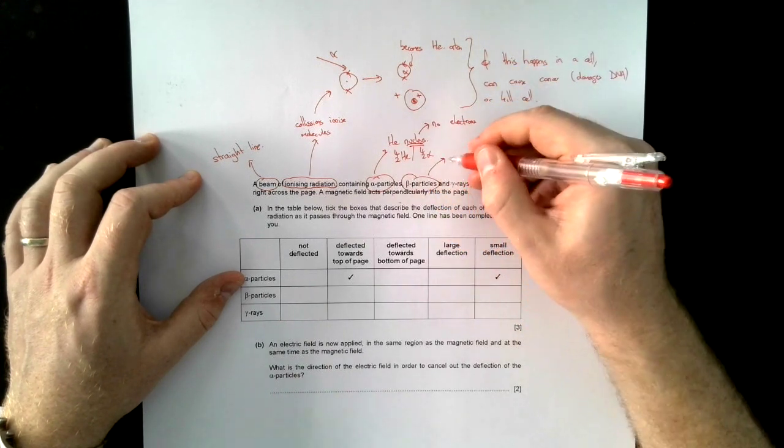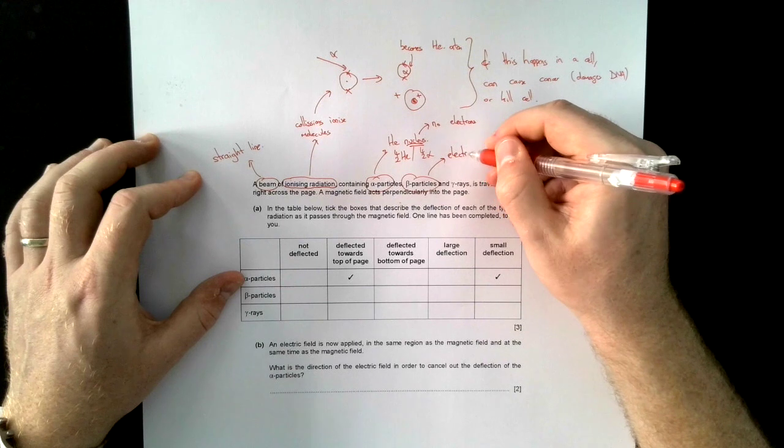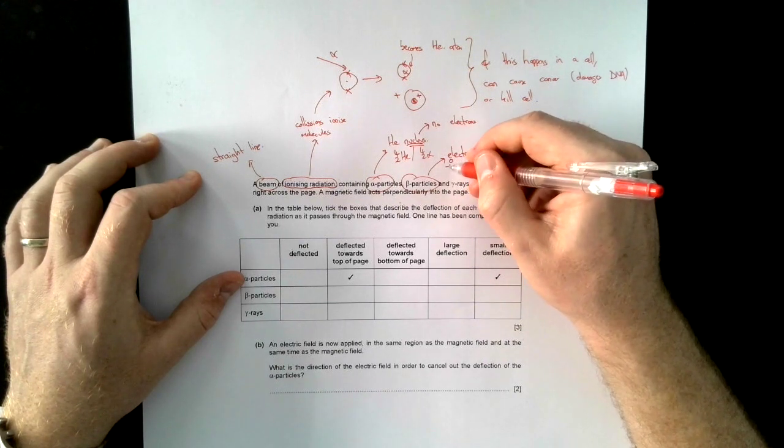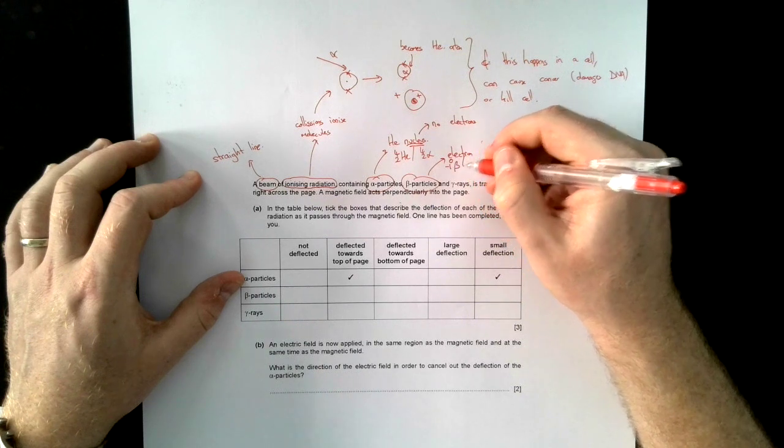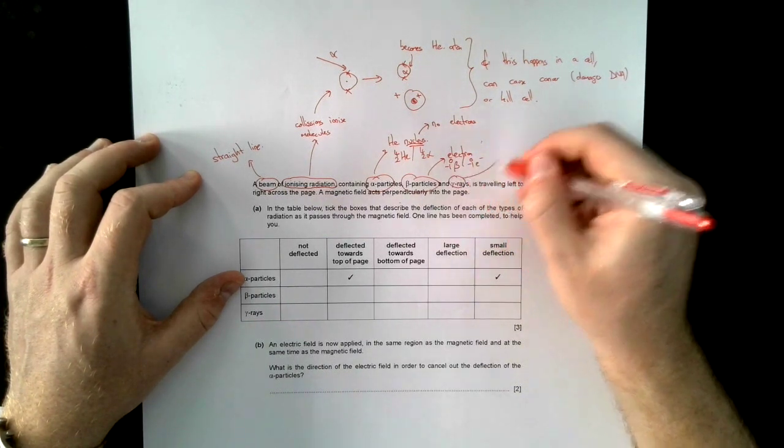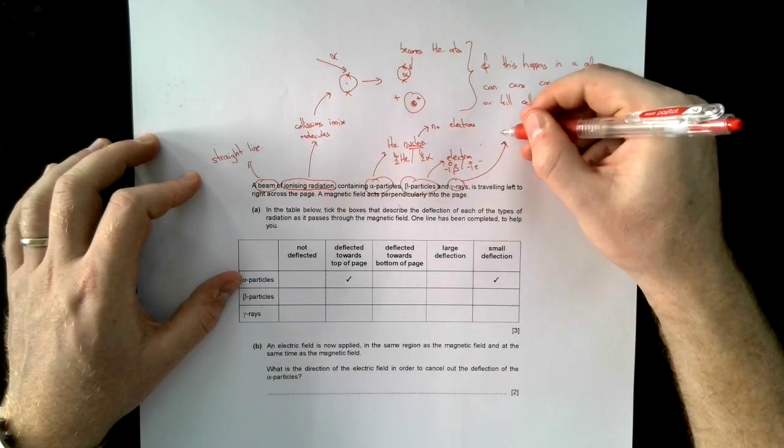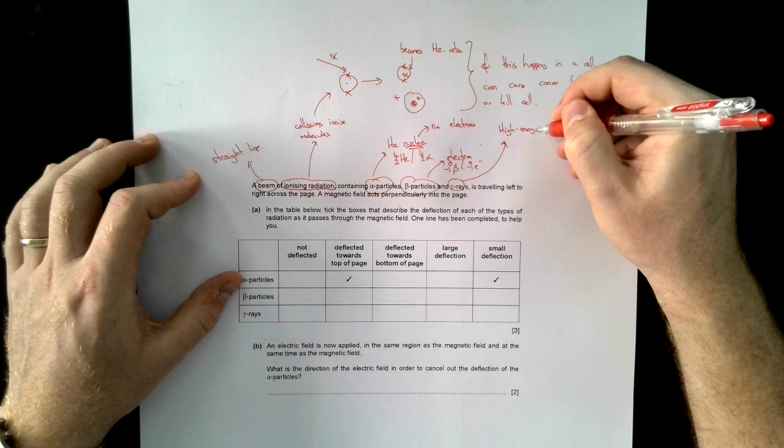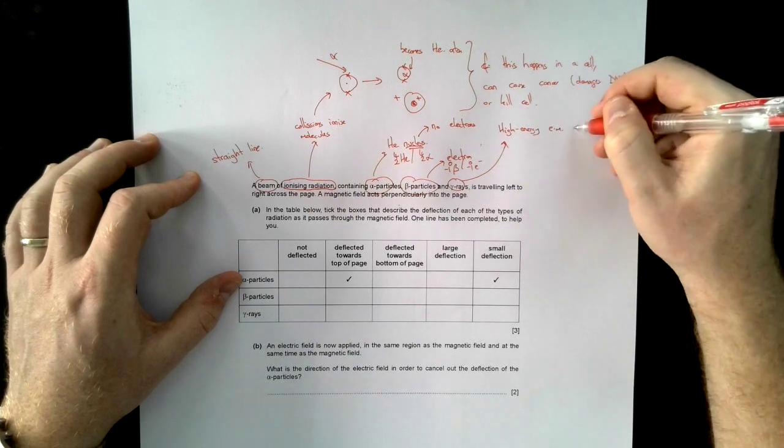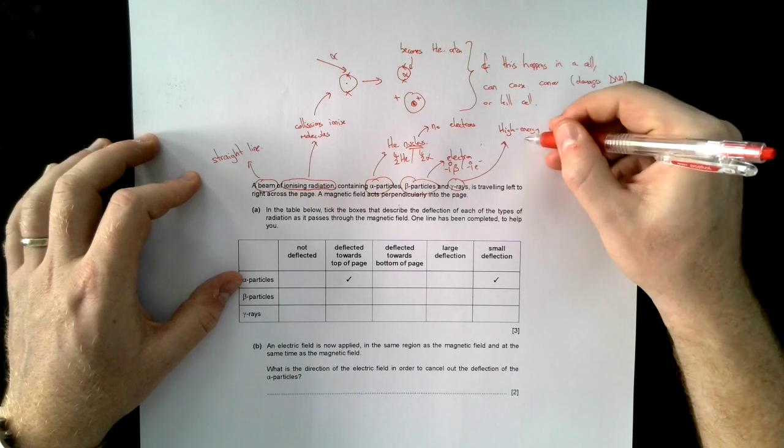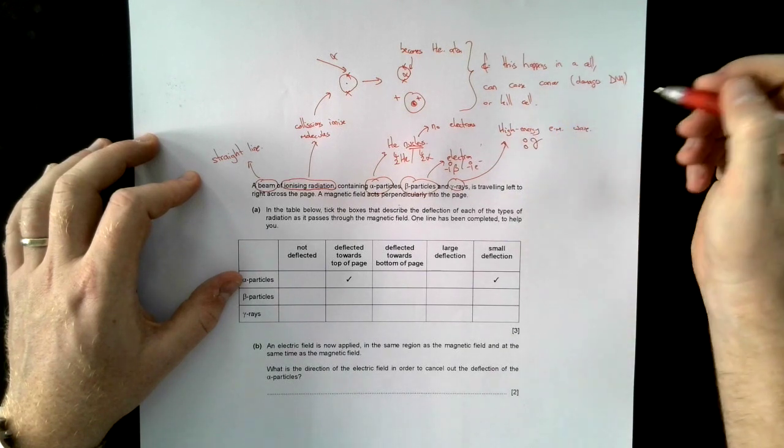Beta particles. So I know that that is an electron. And I would write it as 0, negative 1, beta or 0, negative 1, E minus. And gamma rays, that is a high energy EM wave. And I would write that as 0, 0, gamma.